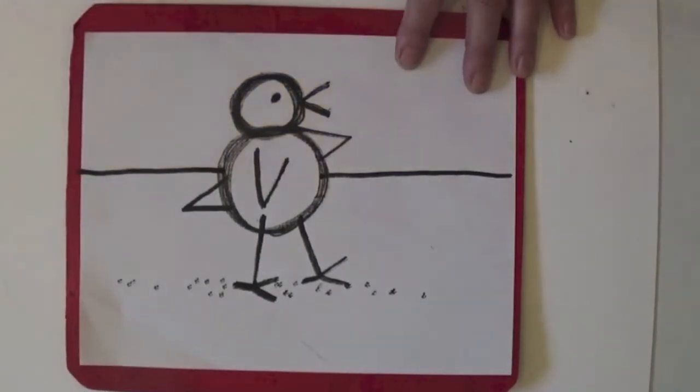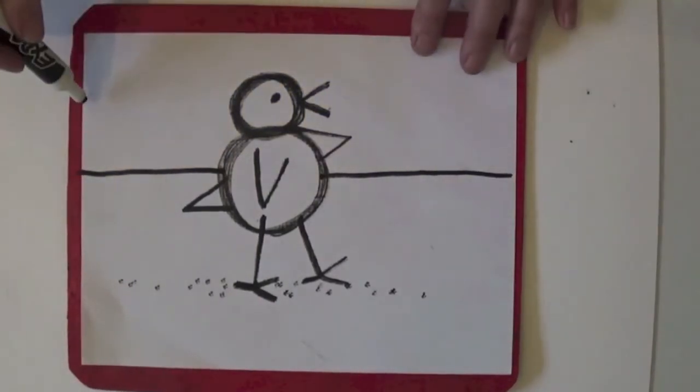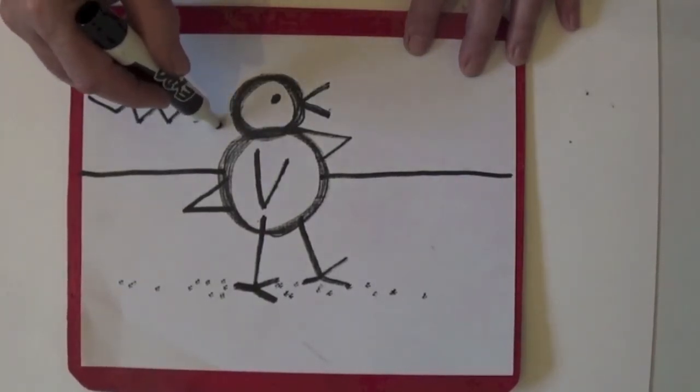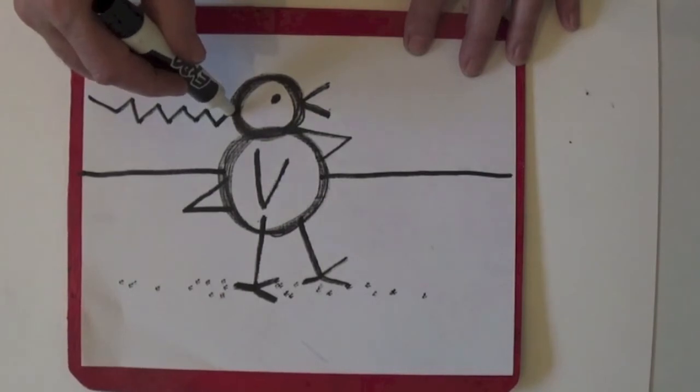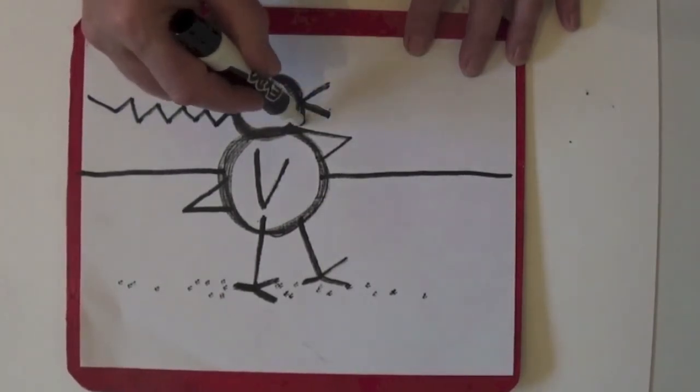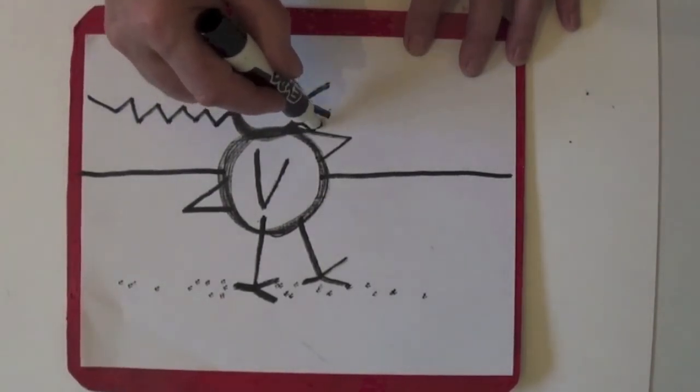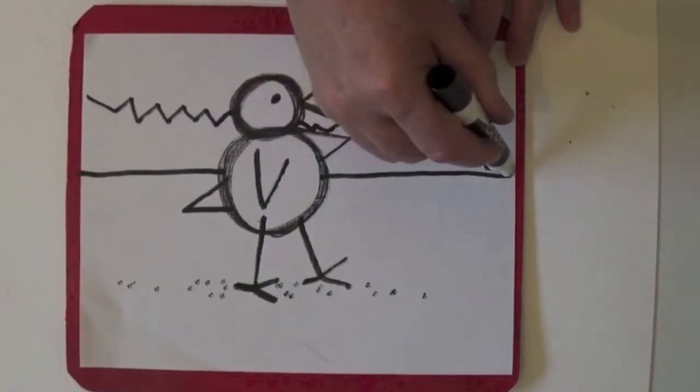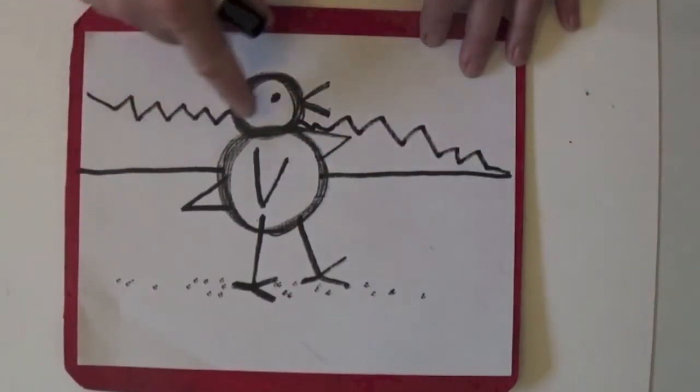Beaker's down by the beach. So we're going to need some zigzag mountains. Zig-zag, zig-zag. Oh, I've got to stop and hop over to the other side. Zig-zag, zig-zag. The mountains are behind Beaker.